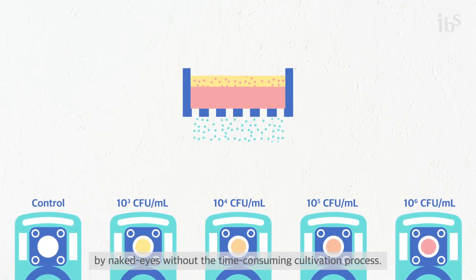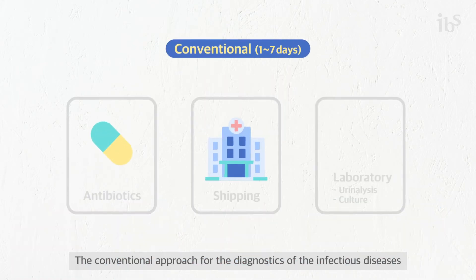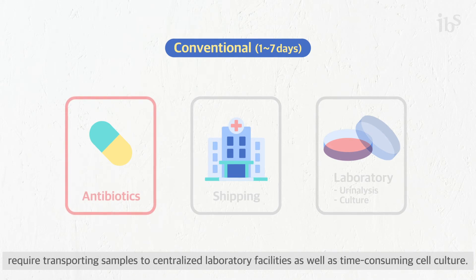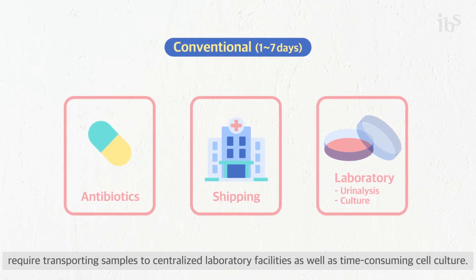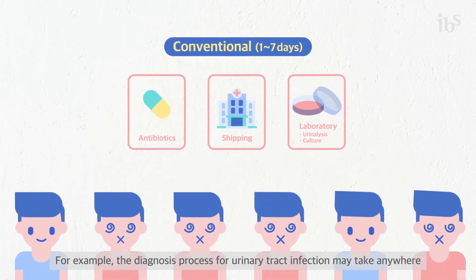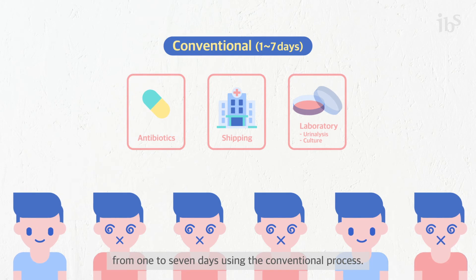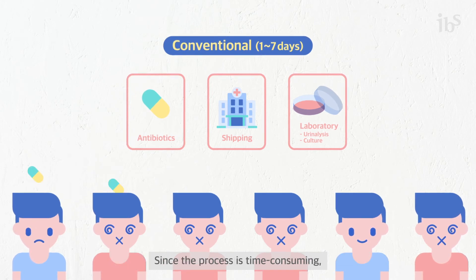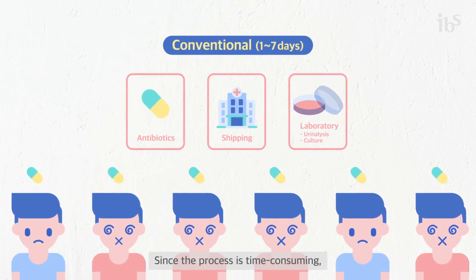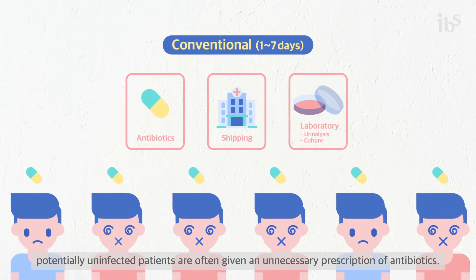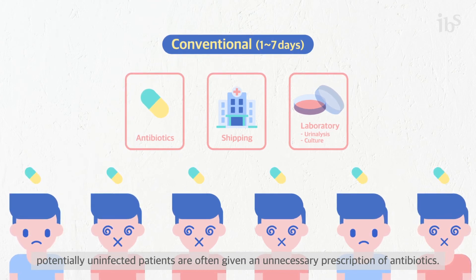The conventional approach for diagnosing infectious diseases requires time-consuming cell culture as well as transporting samples to centralized laboratory facilities. For example, the diagnosis process for urinary tract infection may take anywhere from one to seven days. Since the process is time-consuming, potentially uninfected patients are often given unnecessary prescriptions of antibiotics.